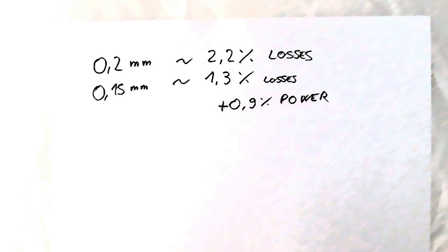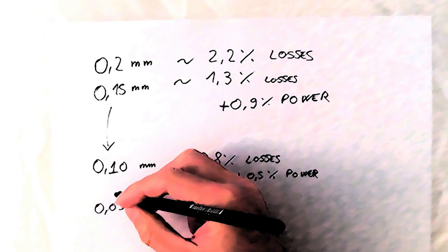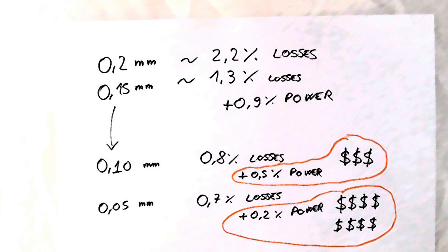0.2 mm laminations account for about 2.2% of motor losses. By shrinking to 0.15 mm laminations, we can increase the power by another 0.9%. And by further shrinking the laminations, we gain another bit of power. But the costs raise exponentially.